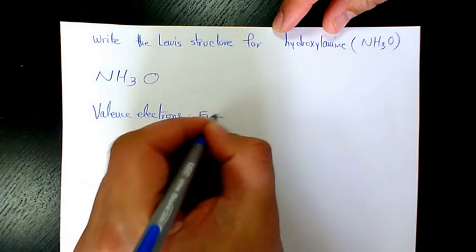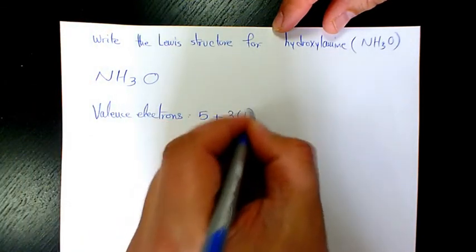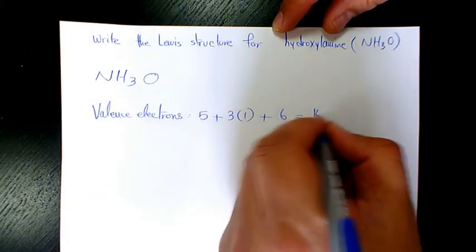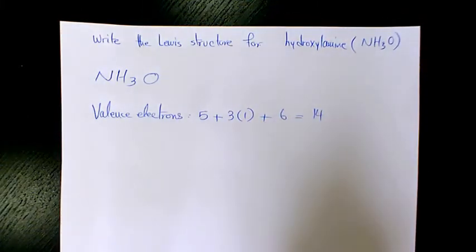Nitrogen is 5. Hydrogen is 1, 3 times 1. Oxygen is 6. So it's going to be 14 electrons.